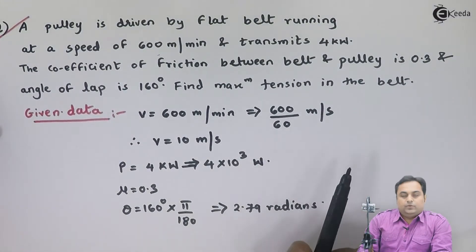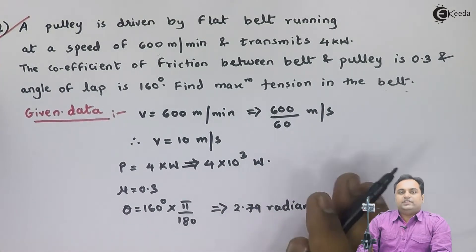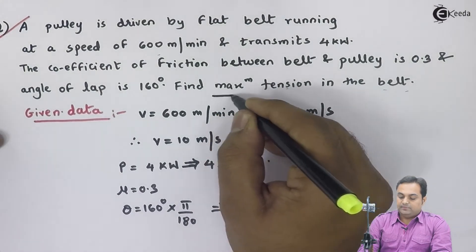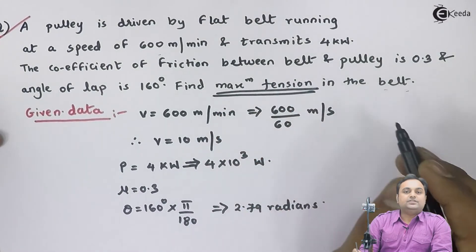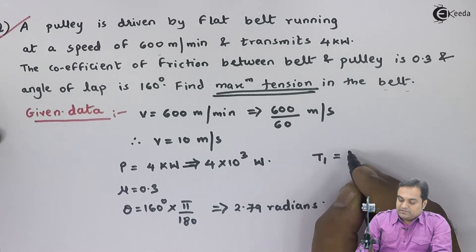Next, the question is we have to find out maximum tension in the belt. Whenever they say that you have to calculate maximum tension, maximum tension is tension in tight side. So T1 is the unknown for us.